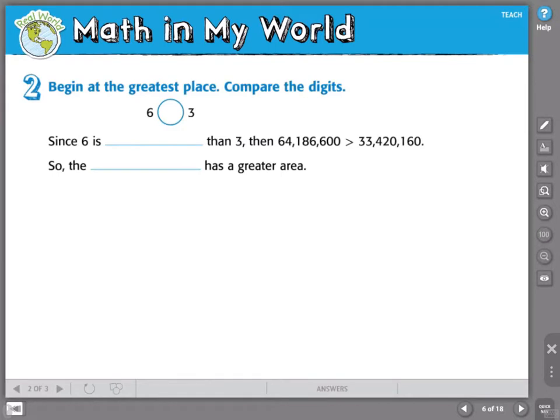I know that 6 is greater than 3, since 6 is greater than 3, then 64,186,600 is greater than 33,420,160. So, the Pacific Ocean has the greater value.